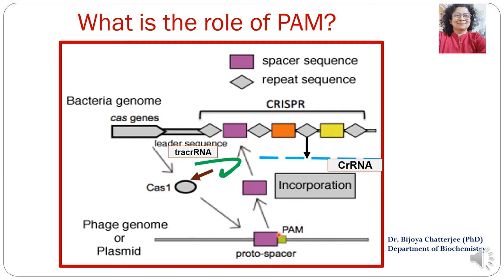Cas9 will bind and cleave the target DNA only if it is followed by the PAM sequence. Cas9 will be able to inactivate the phage genome only when the protospacer is followed by the PAM sequence. Both protospacer and PAM sequence are nucleotide bases.